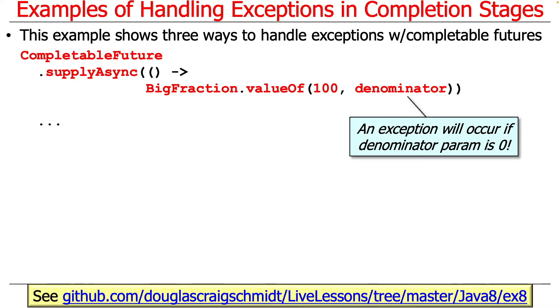This particular example will show all three of the different ways to handle exceptions when completable futures are used. Here is a synopsis of where things will be generating exceptions. We're going to call supplyAsync to create a BigFraction with the numerator of 100 and the denominator of something which could be zero. If the denominator is zero, an exception will be thrown, the arithmetic exception. If it's non-zero, then it'll create a big fraction with that as the denominator.